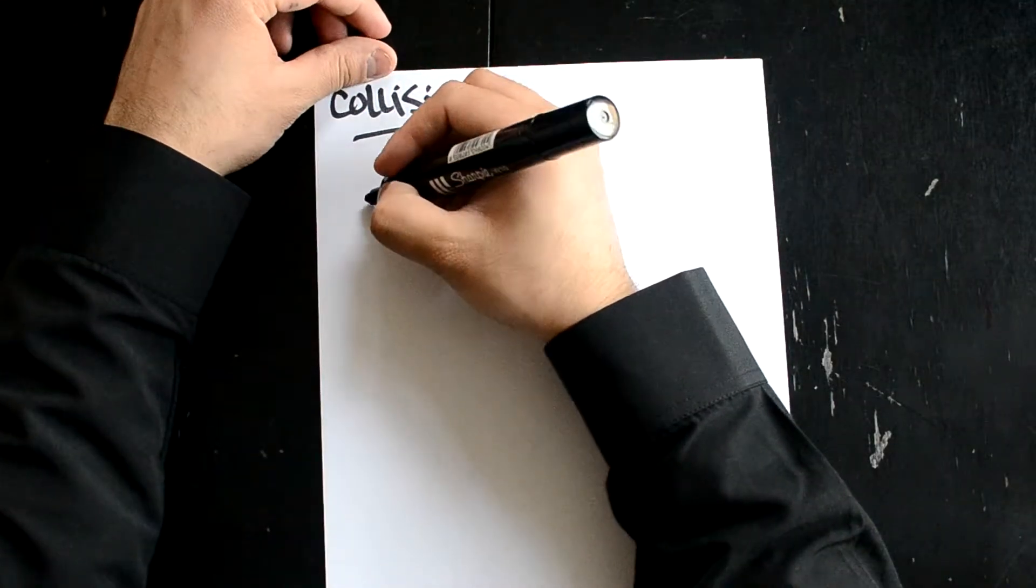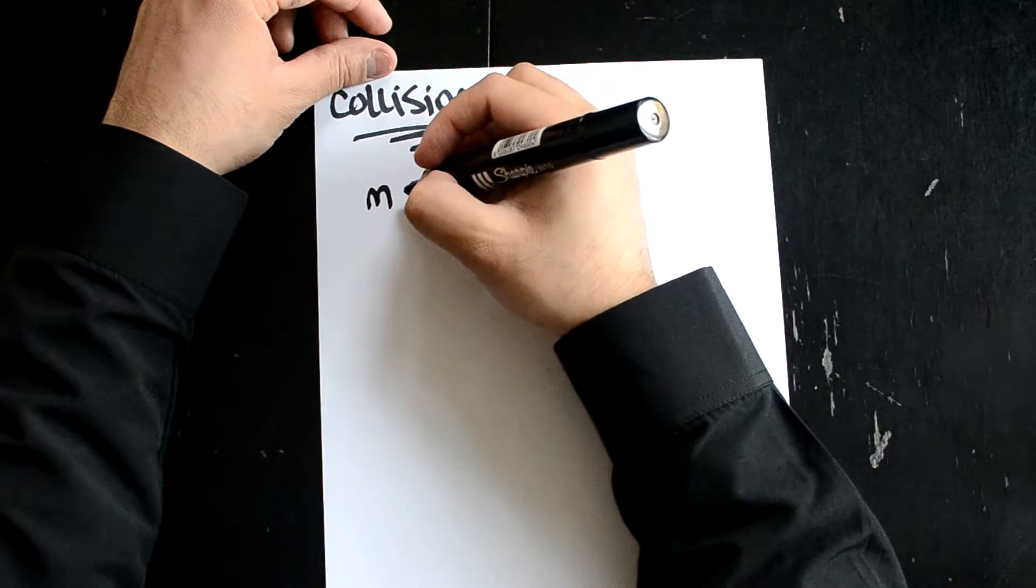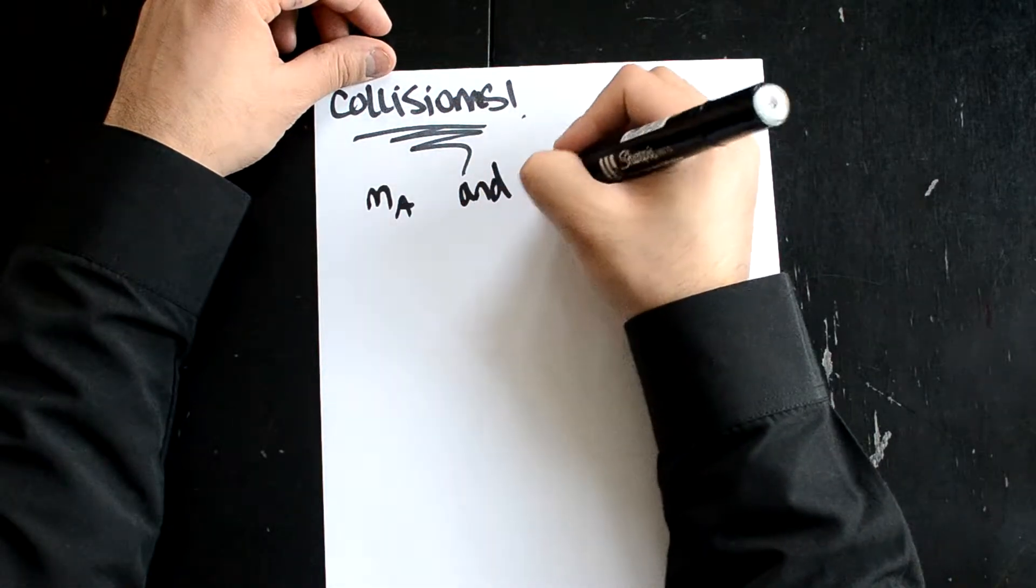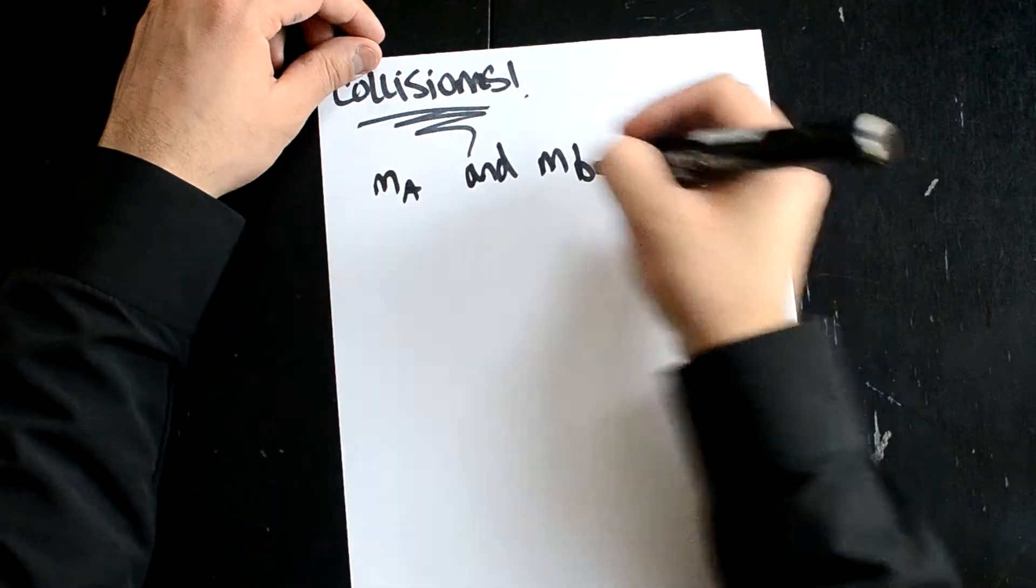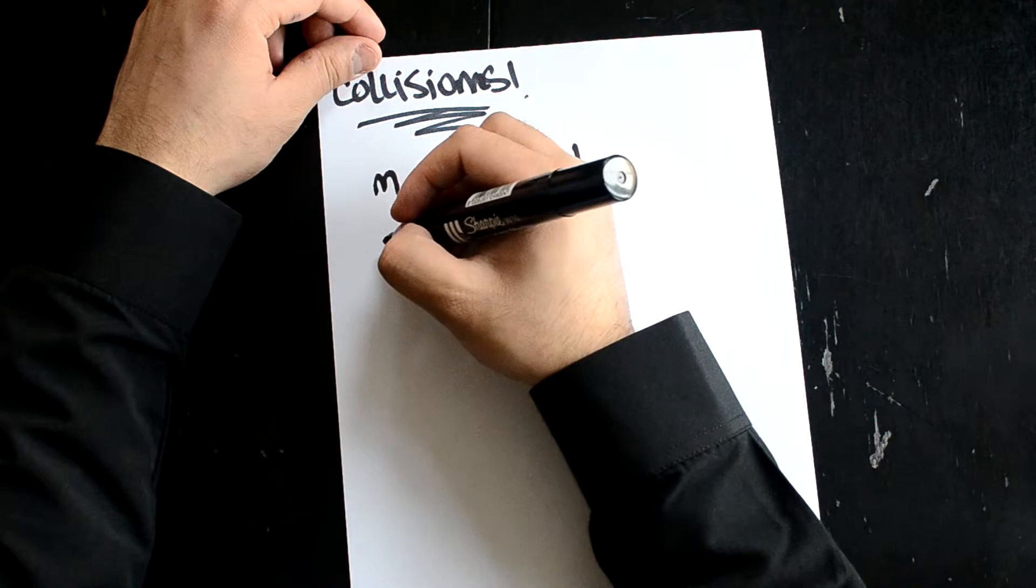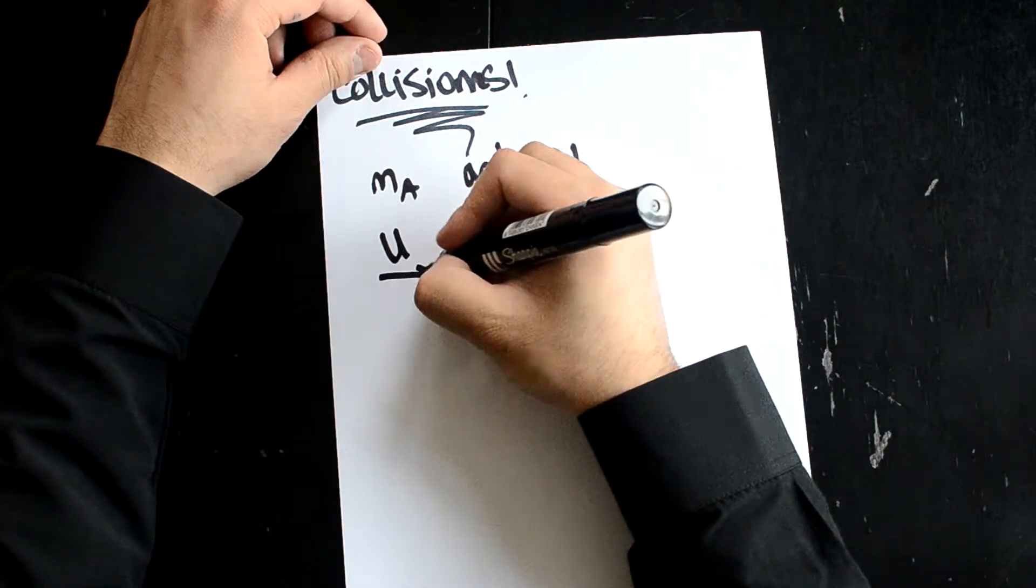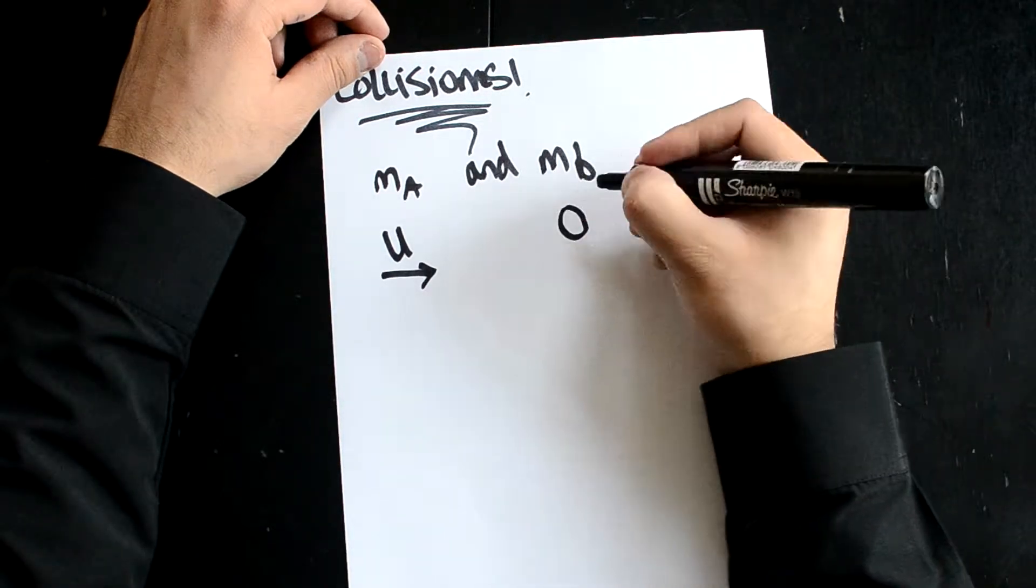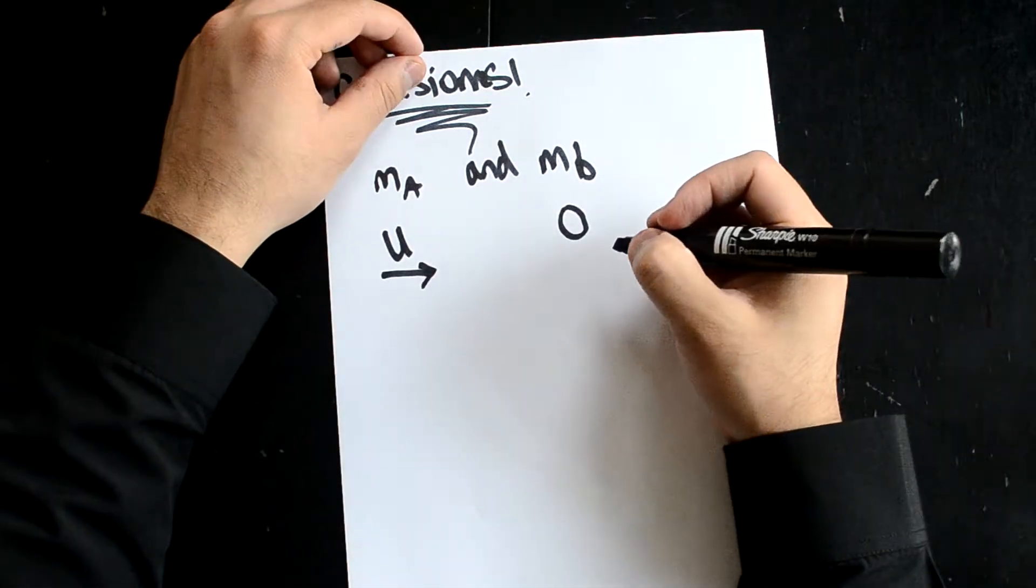I'm going to give an example where we have two balls, ma and mb. We know that ma begins with velocity u acting in the positive direction, while mb is sitting stationary. So one ball is going to hit another ball.